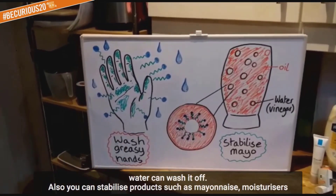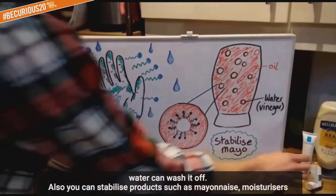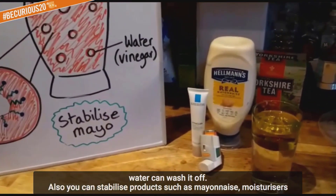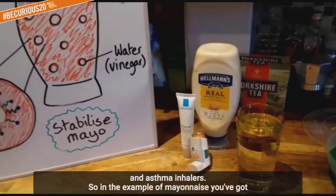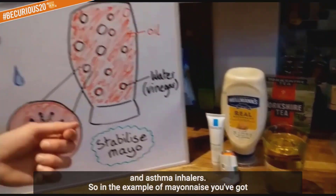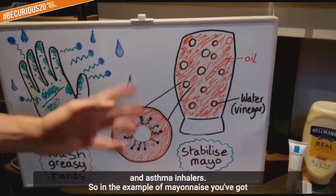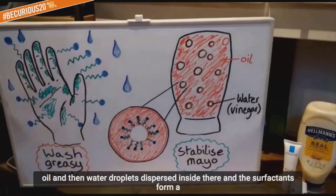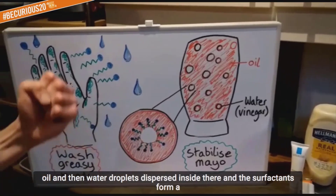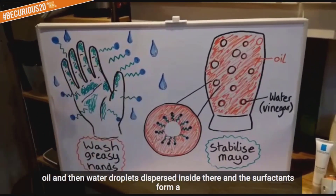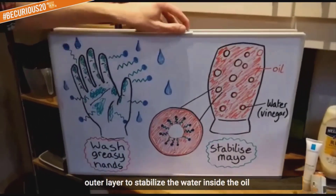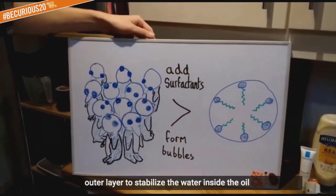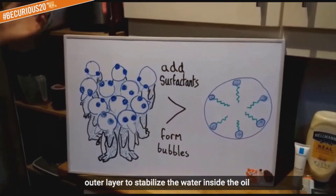You can also stabilize products such as mayonnaise, moisturizers, and aspirin inhalers. In the example of mayonnaise, you've got oil and then water droplets dispersed inside, and the surfactants form an outer layer to stabilize the water inside the oil. Surfactants can also help to form bubbles.